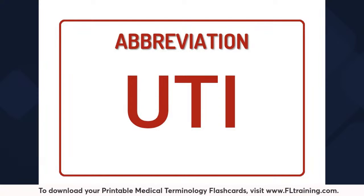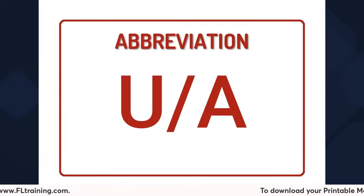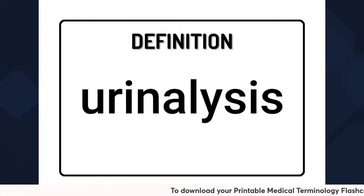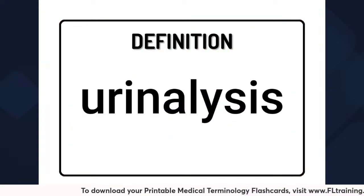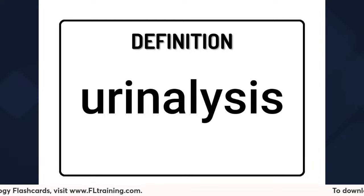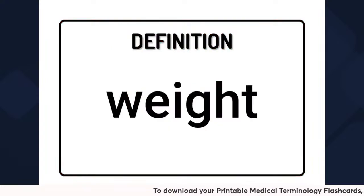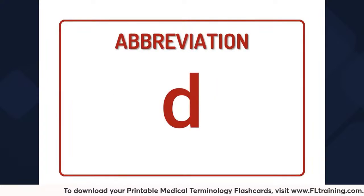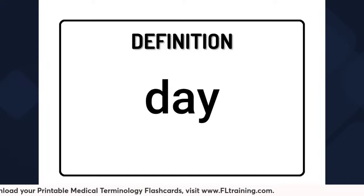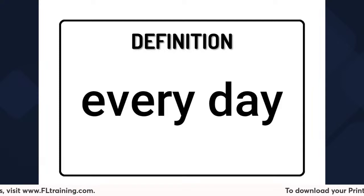U-T-I is the medical abbreviation for urinary tract infection. U-slash-A — when we have you collect the urine specimen, it is normally for a urinalysis. We need to know about the pH level and how many proteins and sugars are within that urine sample. W-T is the medical abbreviation for weight. D is the abbreviation for day. Q-D means every day.